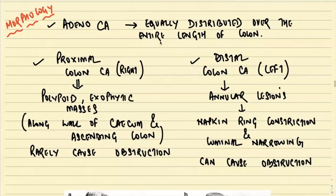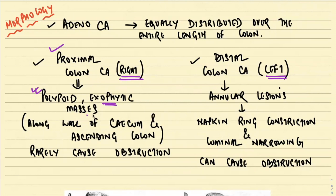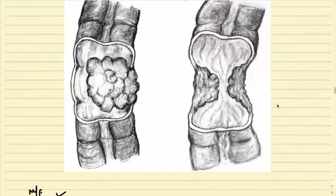Adenocarcinoma is equally distributed over the entire length of the colon, but tumors on the right side behave differently from those on the left side. Proximal colon carcinomas present as polypoid exophytic masses, whereas distal colon carcinomas present as annular lesions.